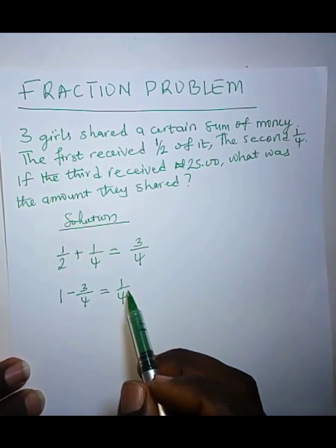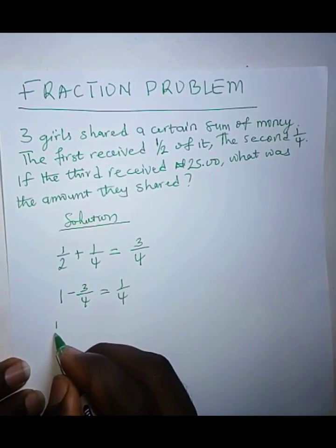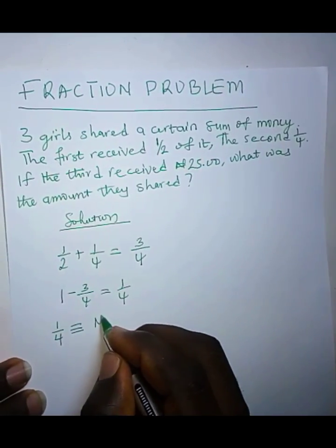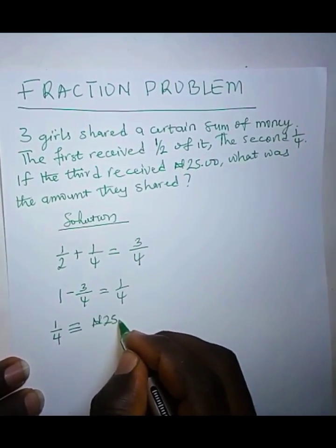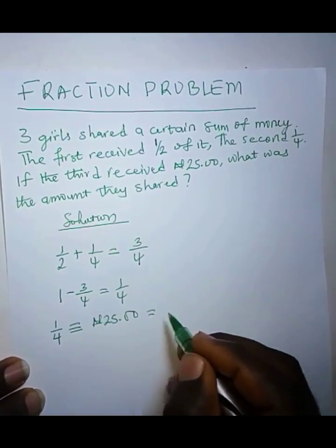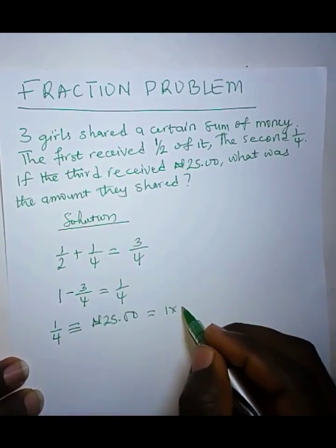And so that means that this 1 over 4, as one part, represents 25 Naira. Okay, it represents 25 Naira, which is 1 times, that is this 1 here, times 25 Naira. So that is 25 Naira.